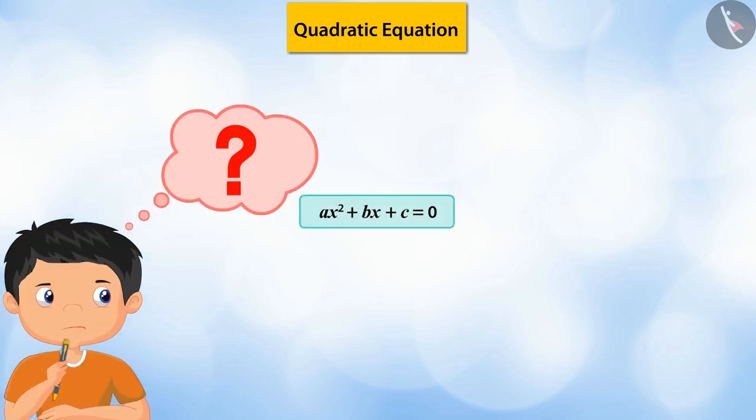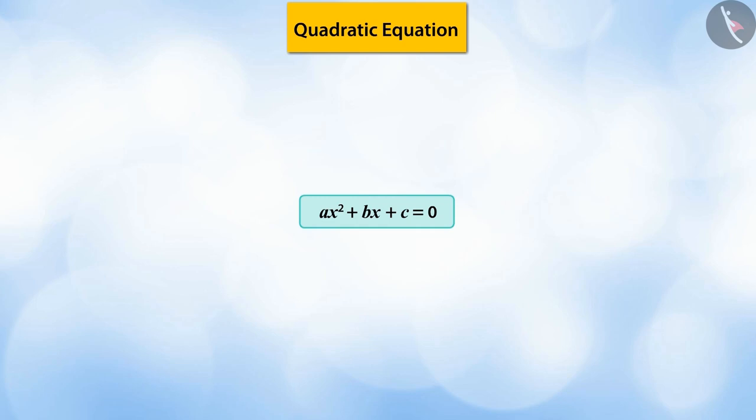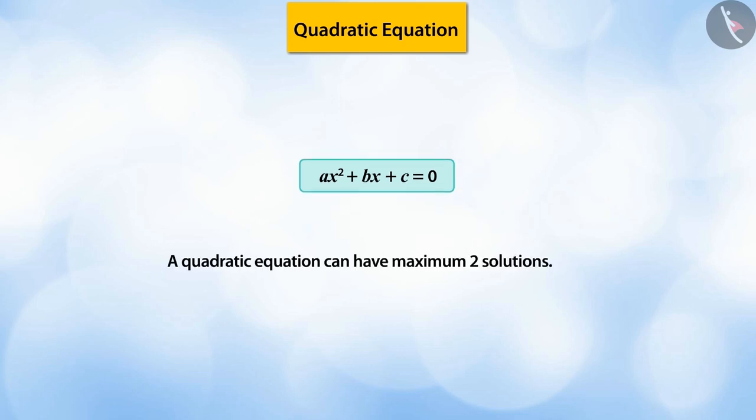Can you tell the maximum number of solutions a quadratic equation can have? Very good! It can have a maximum of two solutions. How did you know this? A quadratic equation has two as the highest degree. Hence, a quadratic equation can have a maximum of two solutions.